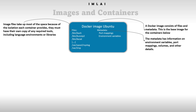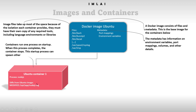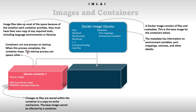Now let's build three containers from this image. Container one takes Ubuntu as a base image, but the process running inside it is Node.js — the base image is still Ubuntu. A container runs one process on startup; when that process completes, the container stops. The startup process can spawn other processes, and changes to files are stored within the container via a copy-on-write mechanism. The base image cannot be affected by a container.